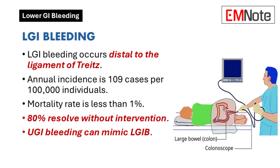However, it is important to recognize that bleeding from an upper gastrointestinal source remains the most common cause of blood found in the lower gastrointestinal tract. Among patients with confirmed lower gastrointestinal bleeding, the most frequent causes include diverticular disease, colitis, hemorrhoids, and adenomatous polyps or malignancies.